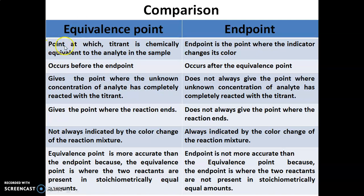The main differences between equivalence point and end point: First, the equivalence point is the point at which the titrant is chemically equivalent to the analyte in the sample, whereas the end point is the point where the indicator changes its color. Second, the equivalence point occurs before the end point; the end point occurs after the equivalence point.